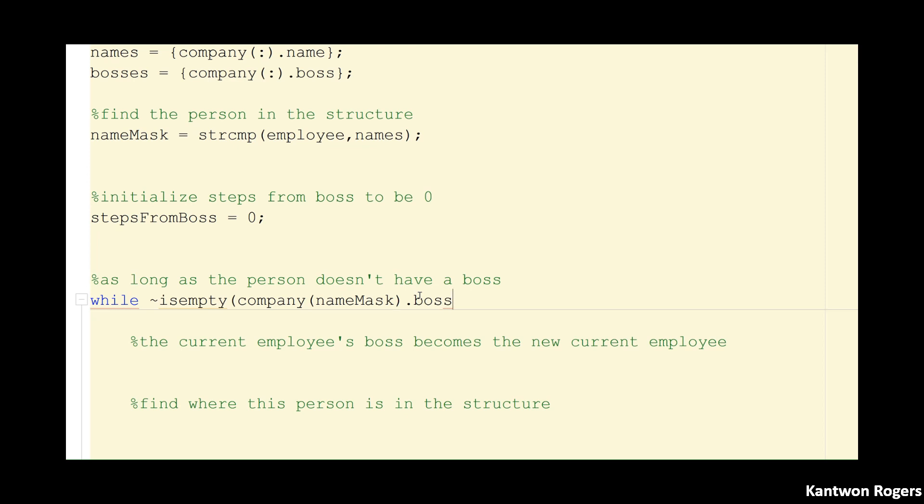So right now this is saying as long as what I have right now of the employee's name, as long as their boss is not empty, I want to keep searching. And so if it's inside of here, this means my current employee that I'm looking at is not my boss.